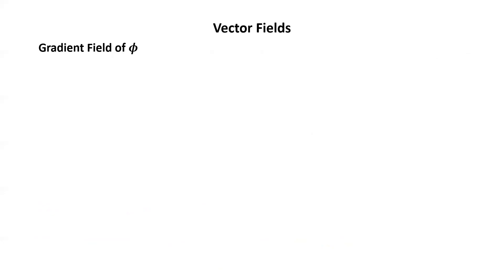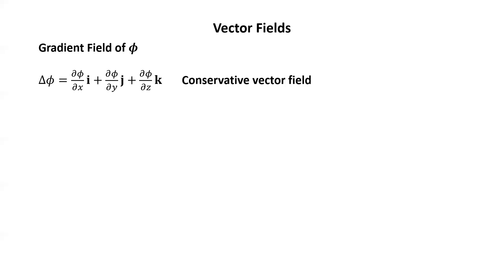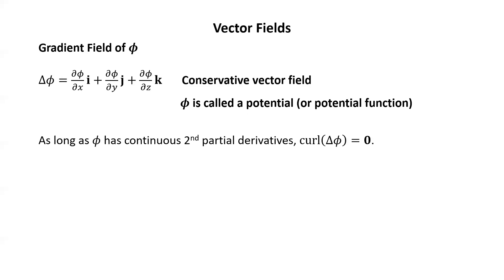The gradient field of phi. When we take the gradient of a scalar function phi, we get a vector whose components are the partial derivatives — that is actually a vector field. The gradient of phi equals (∂φ/∂x)i + (∂φ/∂y)j + (∂φ/∂z)k. This is known as the gradient field of phi, or a conservative vector field. The scalar function phi is called a potential function. As long as phi has continuous second partial derivatives, the curl of the gradient of phi is always zero. Pause the video and try to verify that yourself.